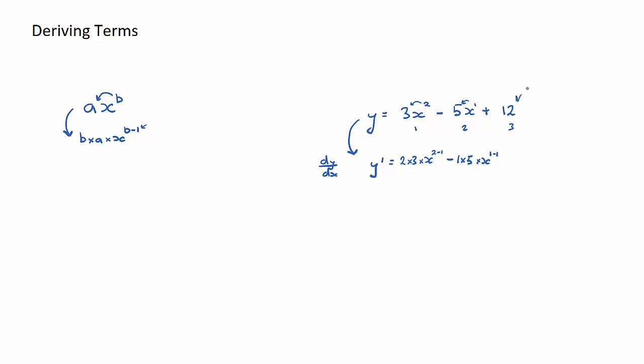Now the third term here is called a constant. It's just a number, it's not attached to a variable, and constants when you derive them go to 0, so we actually don't have anything here so we don't write anything. Now we go and clean this up.